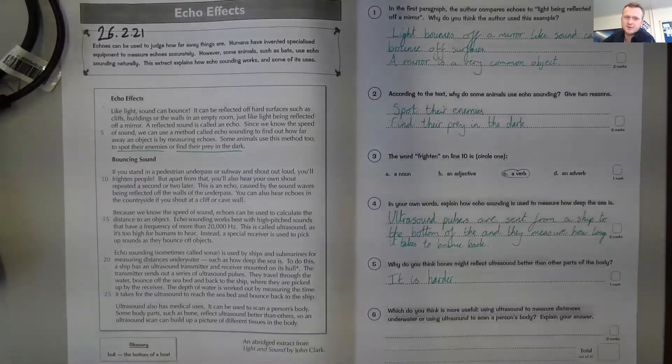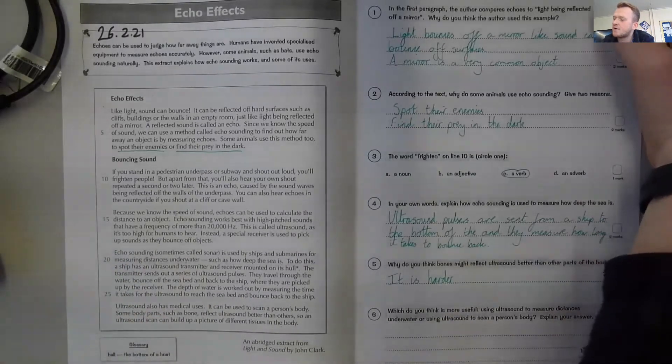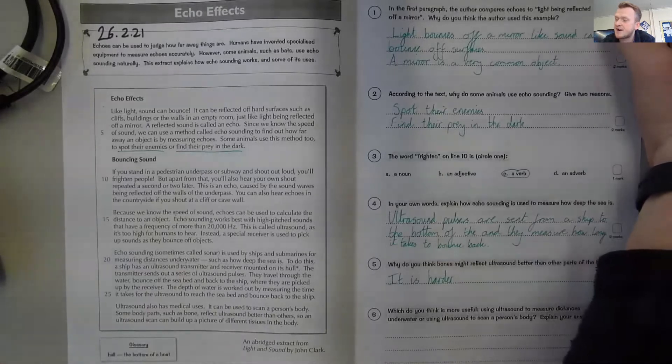Hello, here are the answers for the Echo Effects Reading Comprehension, Mrs Wheeler's reading group. Question number one: In the first paragraph the author compares echoes to light being reflected off a mirror. Why do you think the author has used this example?